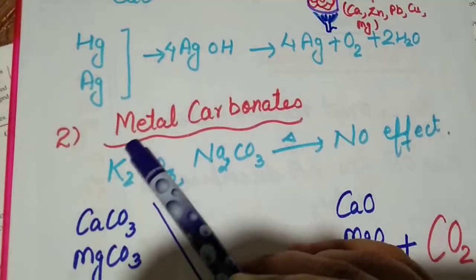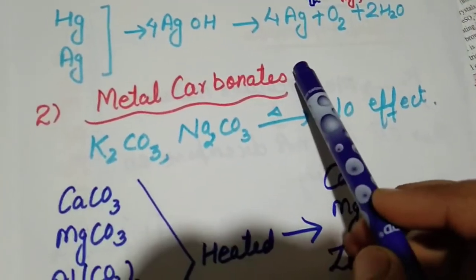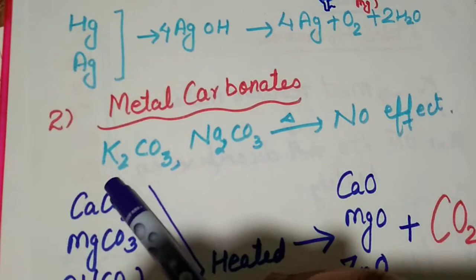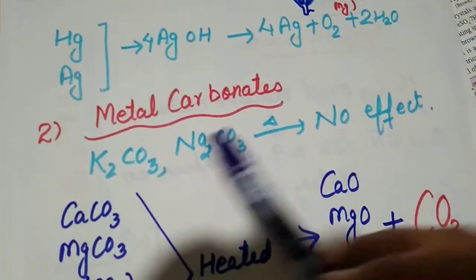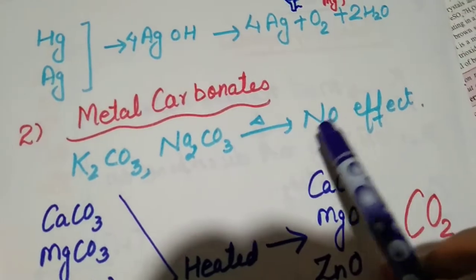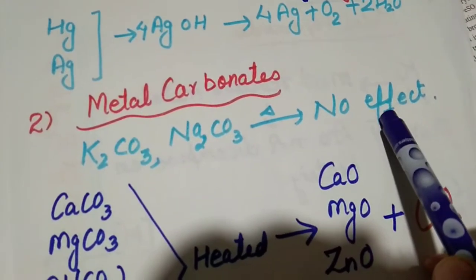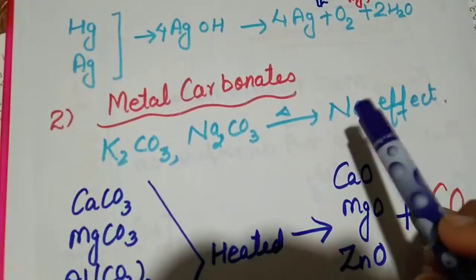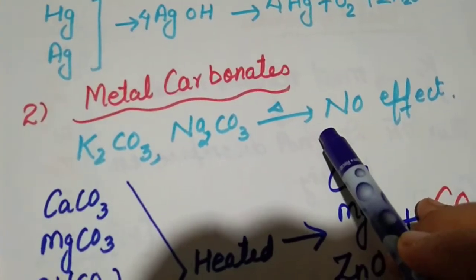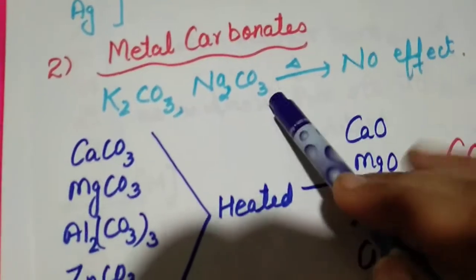Second compound we have is metal carbonate. Potassium carbonate K2CO3, sodium carbonate Na2CO3. If they are heated they have no effect on heating. They are stable to heat. Their carbonates do not break, they do not decompose.